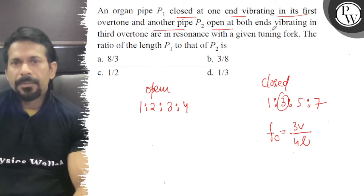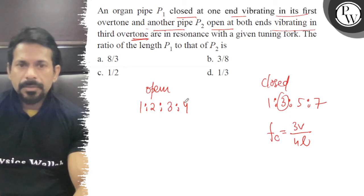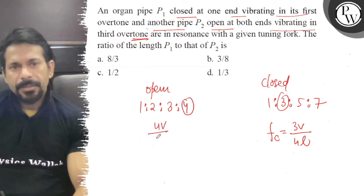And another pipe P2 open at both ends in third overtone. Which one is 3? Which one is open from both ends? So the third overtone is here.